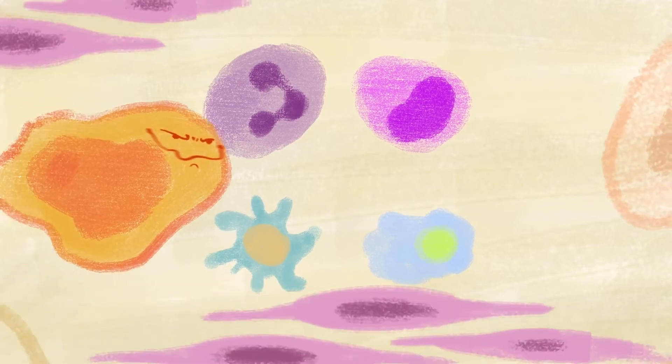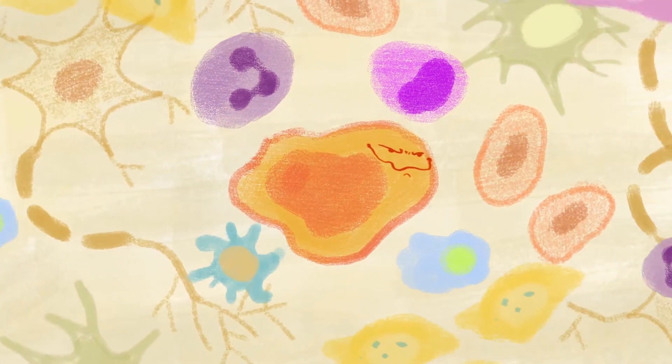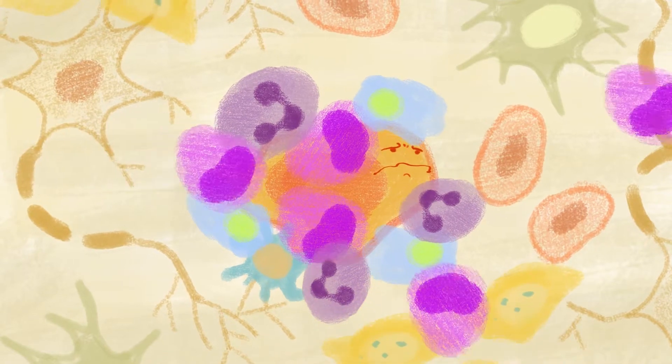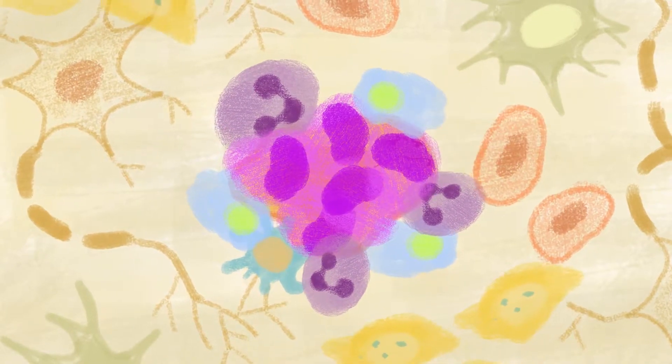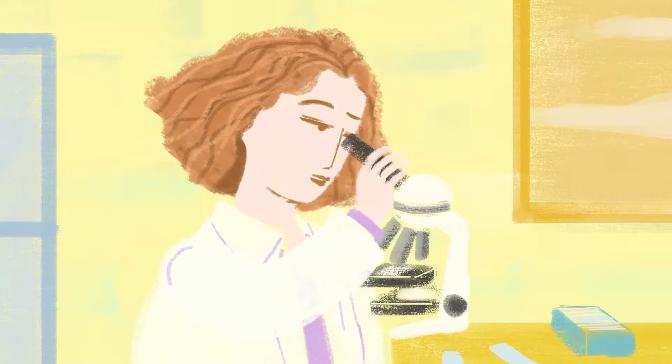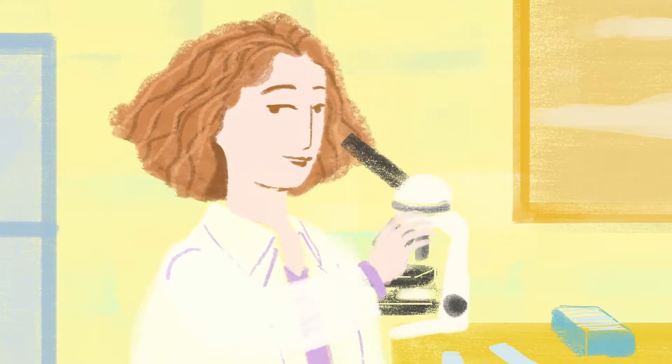New research has been helping us understand how we can improve the tools our immune system naturally gives us, empowering them to find and eliminate cancer. Once our immune system can recognize cancer cells for what they are, they can target those cells for termination.